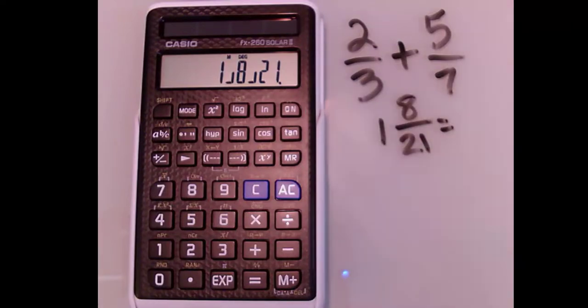Now you can toggle—what would that be as an improper fraction? Above this button in yellow, it has D over C, which will convert it to its improper form. If I hit shift, because it's in yellow, and then this button, it'll take that answer and show me what it is in improper fractional form.